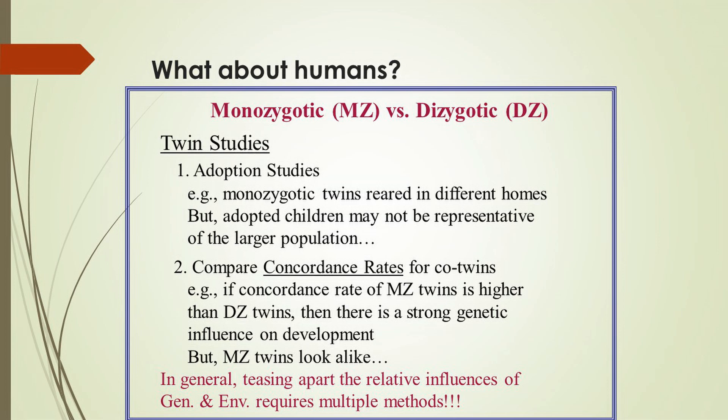Another type of twin study involves comparing concordance rates for co-twins. This is easier to do because there are not that many pairs of twins that have been separated at birth and raised in different families — researchers have to look all over the world to find enough co-twins in that situation. In the second type of study, we compare concordance rates. If we were looking at the development of schizophrenia, we might look at whether monozygotic or identical twins share symptoms of schizophrenia, and whether that tendency is greater than for dizygotic or fraternal twins. If monozygotic twins tend to share symptoms of schizophrenia more often than dizygotic twins, then you can conclude that there's a strong genetic component in the development of schizophrenia.